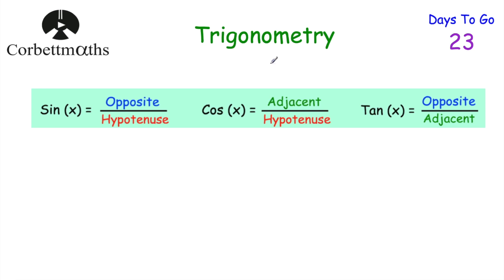We use trigonometry whenever we're dealing with right-angled triangles. We'll either use the lengths of two sides to work out the size of one of the angles, or we'll use the size of one angle and a side to work out the length of another side. The trigonometric ratios are: sine equals opposite divided by hypotenuse, cos equals adjacent divided by hypotenuse, and tan equals opposite divided by adjacent. Some students remember these using SOH CAH TOA, or the mnemonic 'two old angels skipped over heaven carrying a harp.'